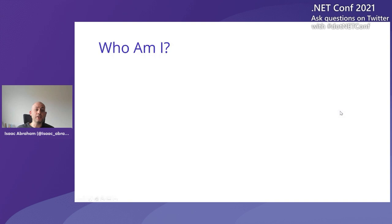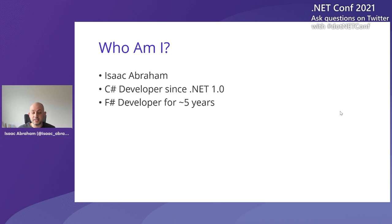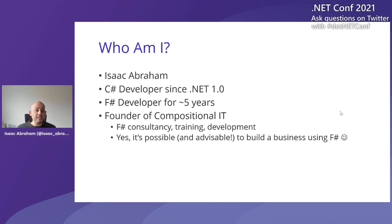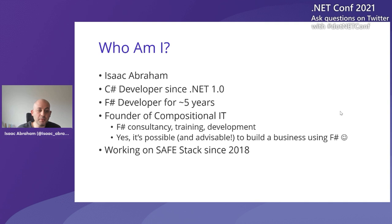Just a little bit about me first. My name's Isaac Abraham. I've been a C-Sharp dev since it came out, almost 20 years now. I've been an F-Sharp dev for just over five years, pretty much exclusively doing that now. I'm the founder of CIT, an F-Sharp consultancy. We do training and dev as well. We do pretty much the same things as most consultancies: line of business apps, ETLs, data transformation exercises. Pretty much the same things you do in C-Sharp; we just happen to be using F-Sharp.